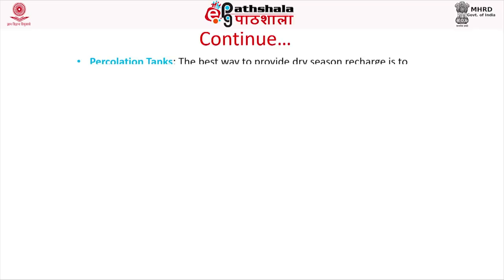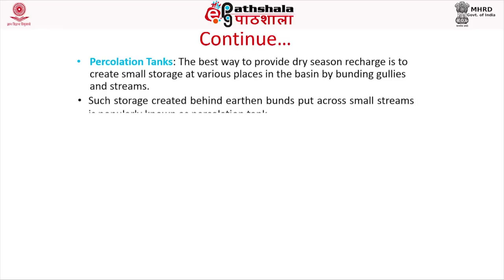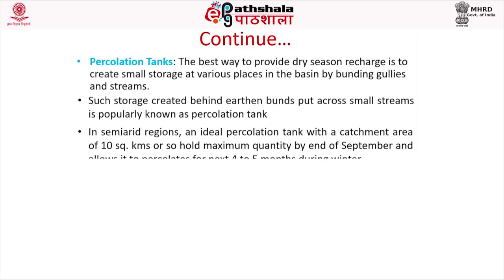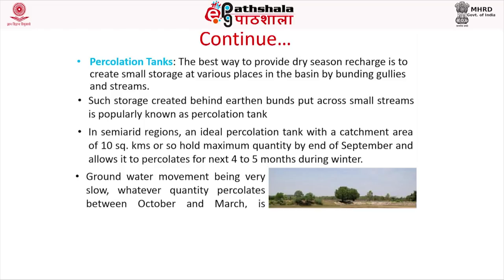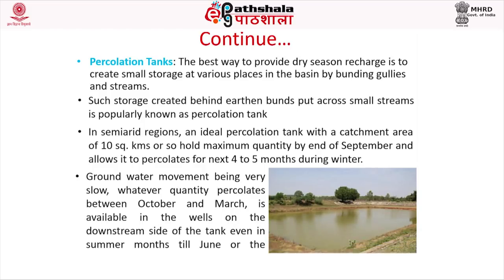The best way to provide dry season recharge is to create small storage at various places in the basin by bunding gullies and streams. Such storage created behind small dams across small streams is popularly known as percolation tanks in semi-arid regions. An ideal percolation tank with a catchment area of 10 square kilometers holds maximum quantity by end of September and allows percolation for the next four to five months. Whatever percolates between October and March is available in downstream wells even in summer months till June.